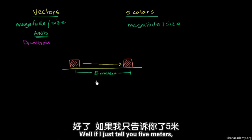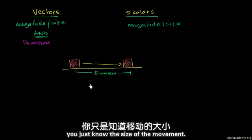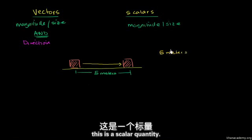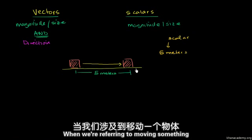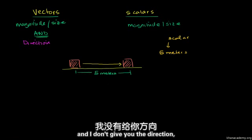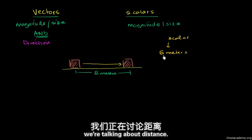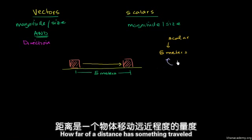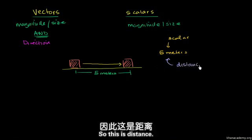Well, if I just tell you five meters, you just know the size of the movement — the magnitude of the movement. So if someone were to just say five meters, this is a scalar quantity. And when we're referring to moving something, or how much something has changed its position, and I don't give you the direction, we're talking about distance.